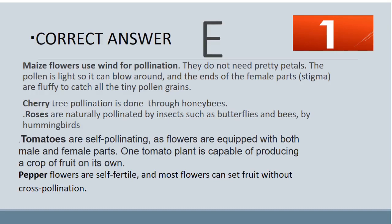The answer is E. Maize flowers use wind for pollination; they do not need pretty petals. The pollen is light so it can blow around, and the ends of the female parts, the stigma, are fluffy to catch all the tiny pollen grains. Cherry tree pollination is done through honeybees. Roses are naturally pollinated by insects such as butterflies, bees, and hummingbirds. Tomatoes and peppers are self-pollinating.